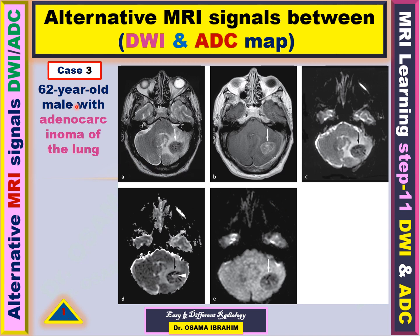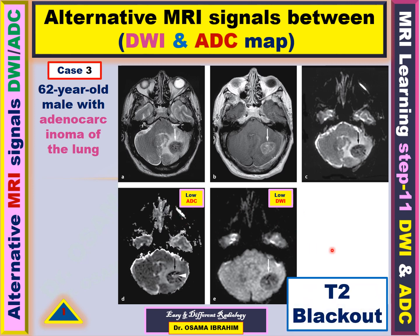This case is a 62-year-old male with a history of adenocarcinoma in the lung, with lesions present on imaging. This is the diffusion-weighted image — the lesions appeared low signal in diffusion. This is the ADC — the lesions also appeared low signal in ADC. Low signal in both — so what is the MRI scientific expression? It is T2 blackout.